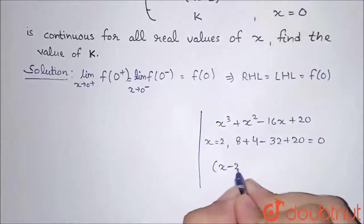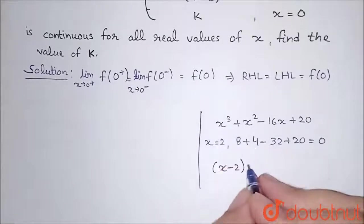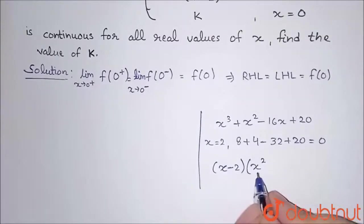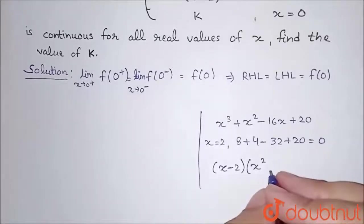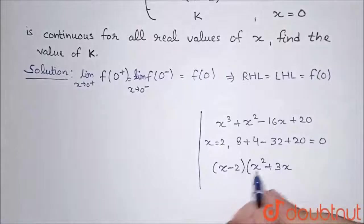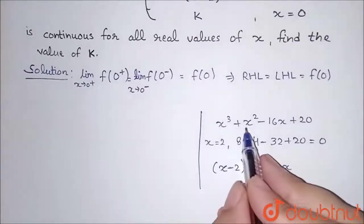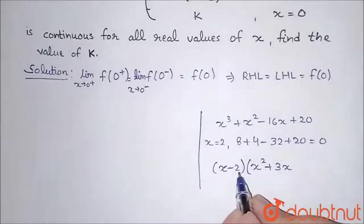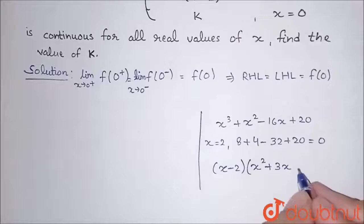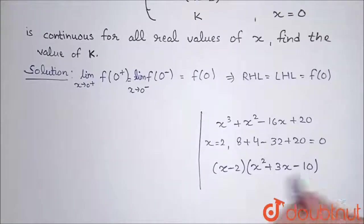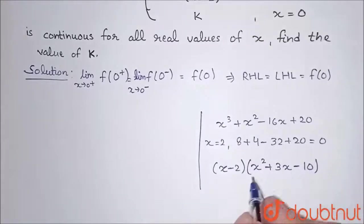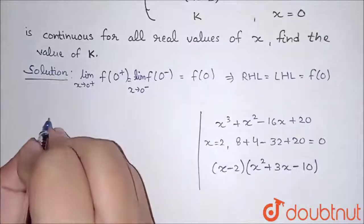Since x minus 2 is a factor, I'll divide the cubic. The first term x cubed divided by x gives x squared. Then to get plus x squared I add plus 3x, giving minus 2x squared plus 3x squared equals x squared. Then minus 6x, but we need minus 16x, so we need minus 10x more. And minus 2 times minus 10 gives plus 20 — consistent.